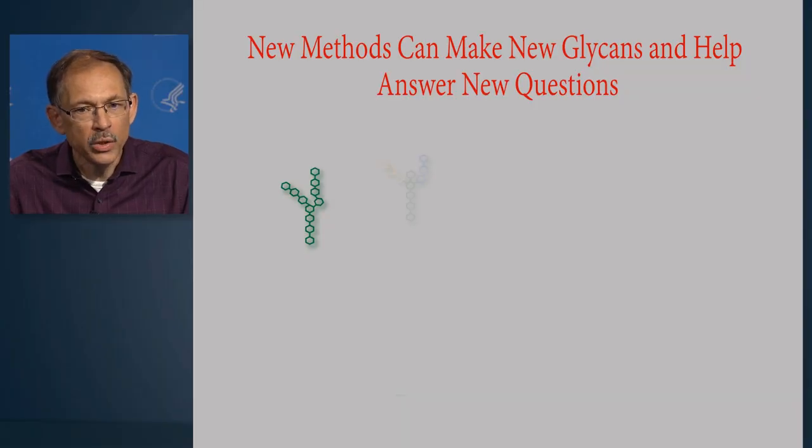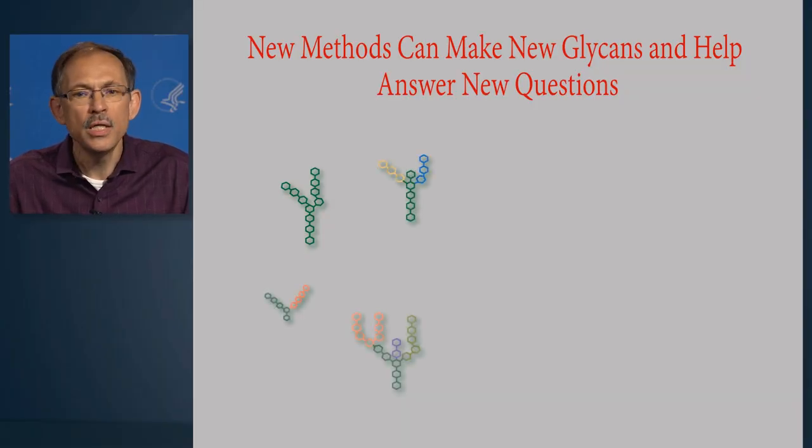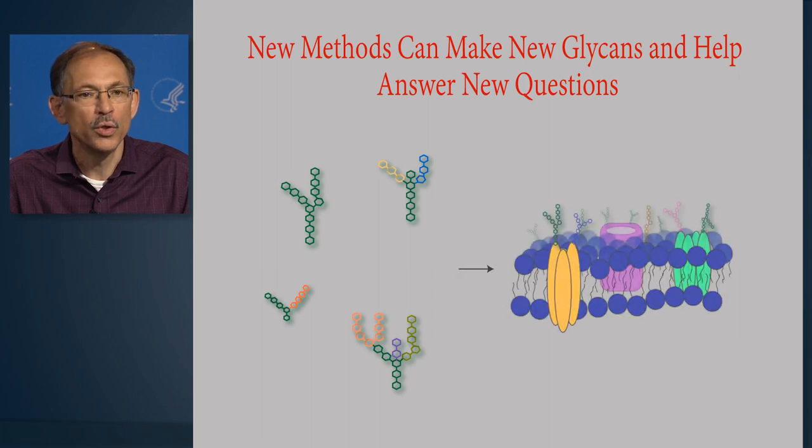The ability to make all these molecules gives an enormous opportunity to advance glycoscience. We're all trying to develop reagents in the field of glycoscience that would help us solve the problem of the spatial and temporal expression of glycans in animal and human bodies.